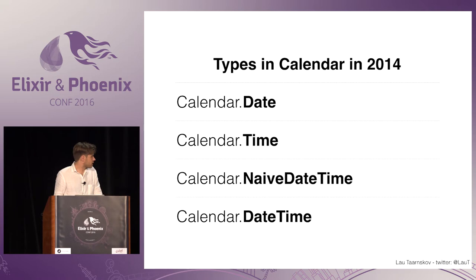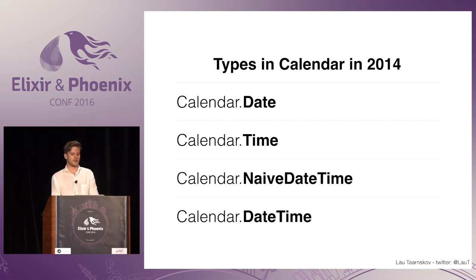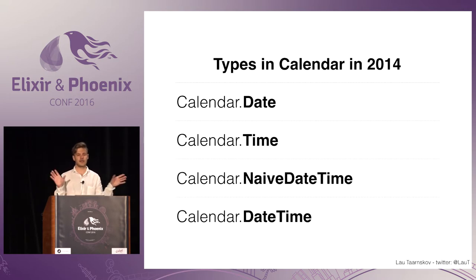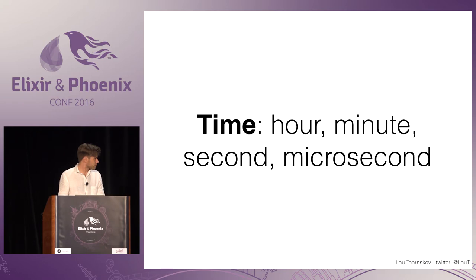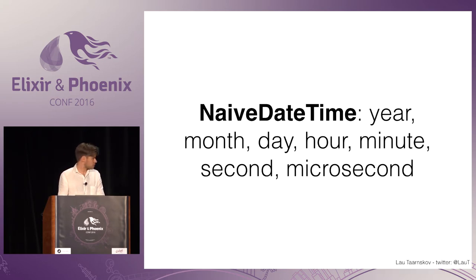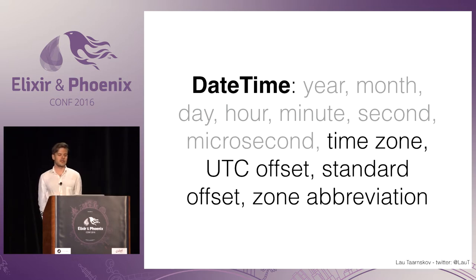In 2014, in the calendar library, you have — and still have — these types. A date and a time are pretty simple, like what you would expect them to be. A naive datetime is a combination of a date and a time. And then you have a datetime. Date, time — they also have a microsecond field. And here's the combination. The datetime is special.